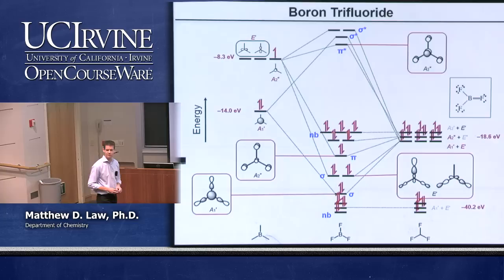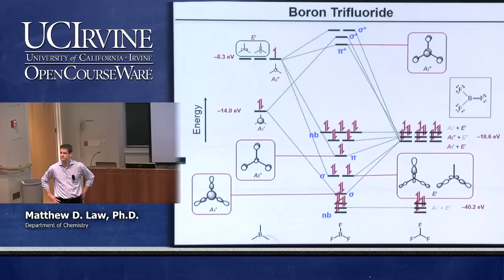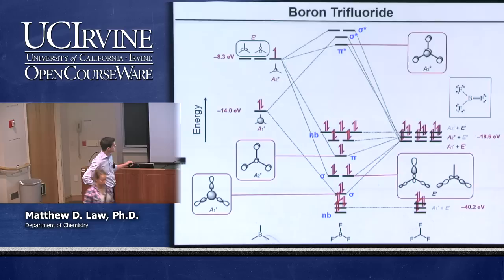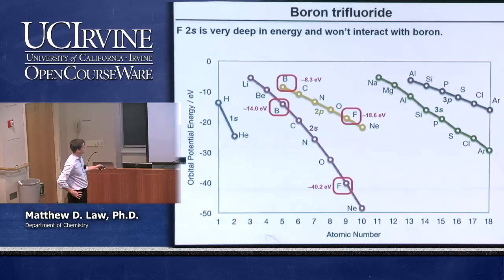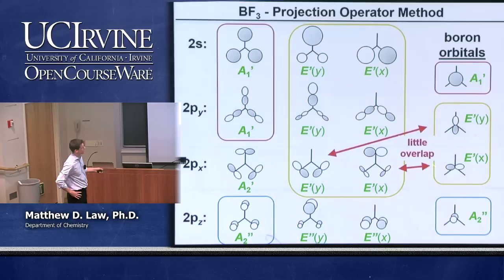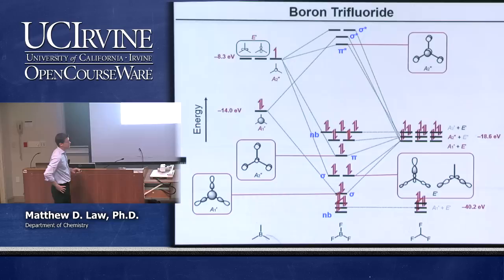Any questions about boron trifluoride? The diagram would be more complete with formal charges present. Regarding the non-bonding orbital stabilization: to look at that we have to go back to the group orbital diagrams. These two orbitals that have poor overlap with the center atom are those that are going to be almost non-bonding. Perhaps a little difficult to see, but if you did a calculation of the actual integral, you'd find that it's very small.